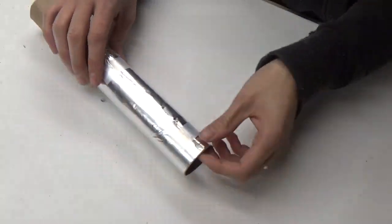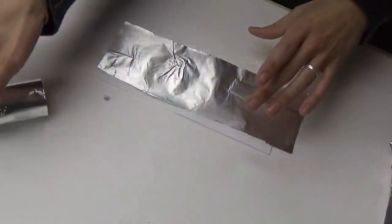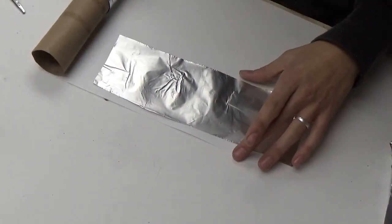Now you have that. Set it aside. Next, take a piece of paper cut again half the length of the paper towel roll.